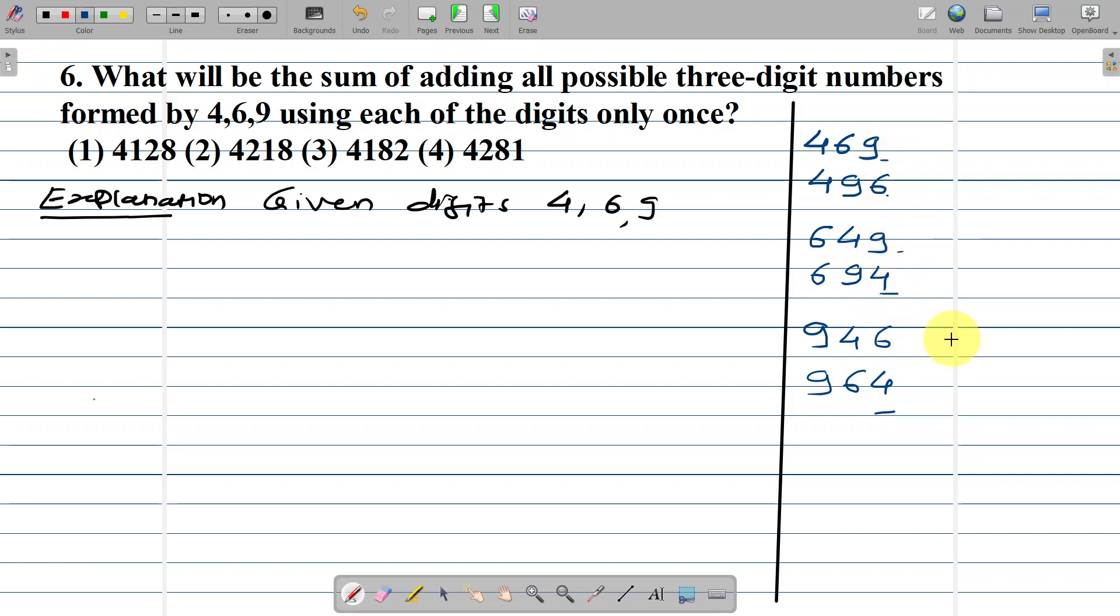You need to be smart here. Each digit - 4, 6, and 9 - will occur twice in each place value.